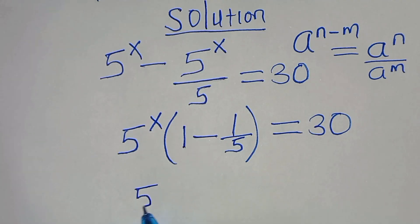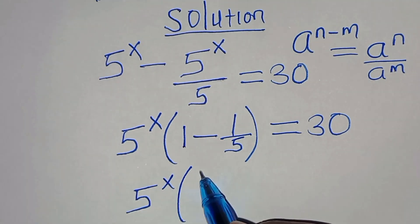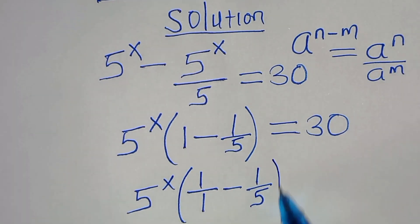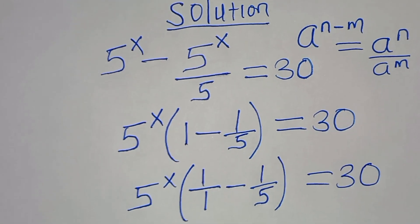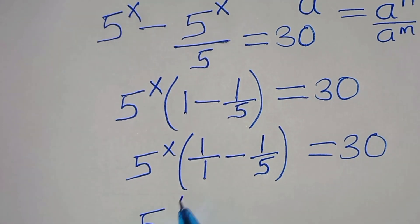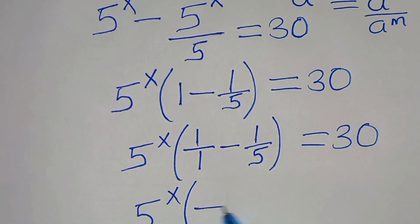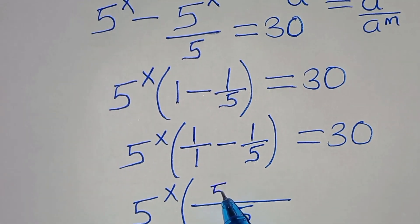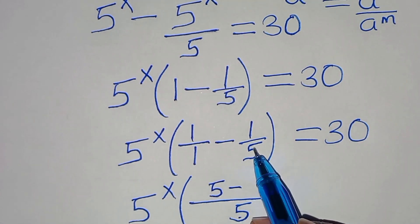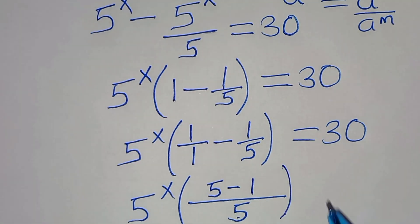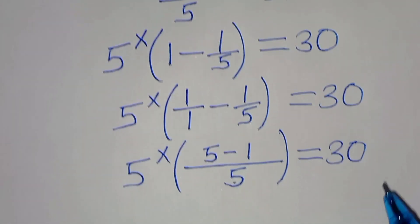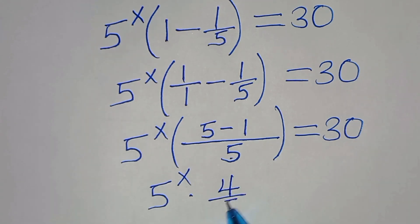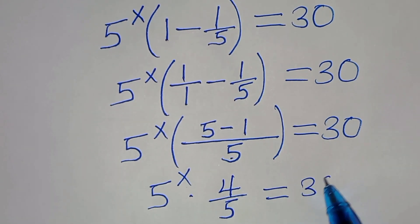So we have 5^x times 1 over 1 minus 1 over 5, equal to 30. The LCM here is 5, so inside the parenthesis we get 5 minus 1 over 5, which is 4 over 5. So we have 5^x multiplied by 4 over 5, equal to 30.